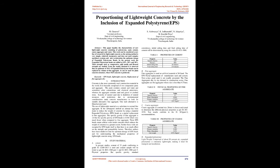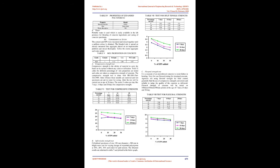Authors have studied the optimum dosage of EPS beads and the mechanical properties of lightweight concrete using EPS beads. Study Material: Cement — In the present studies, cement of 53 grade conforming to IS 12269:2013 is used. The cement sample is tested as per IS 4031:1988 Part 4 and Part 5. Physical properties like specific gravity, standard consistency, initial setting time, and final setting time of cement are determined using IS 4031:1988.